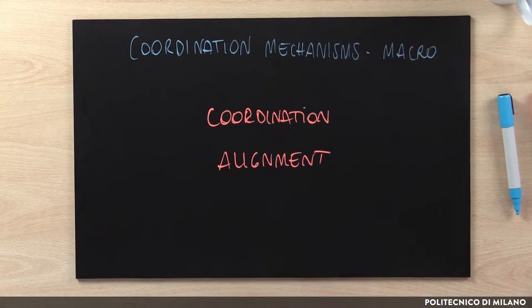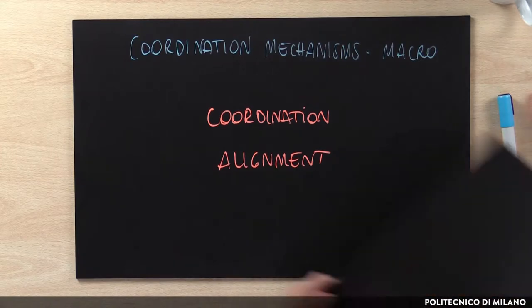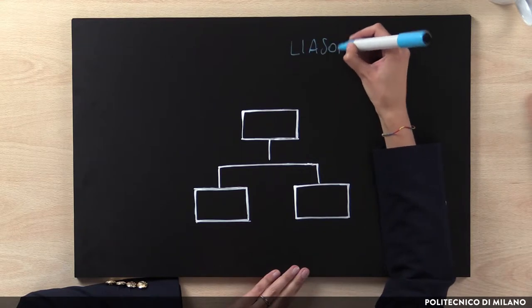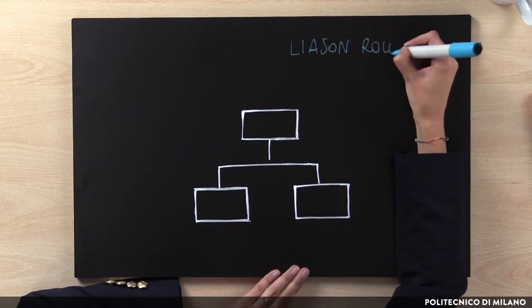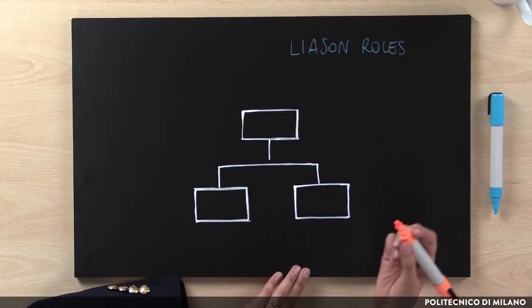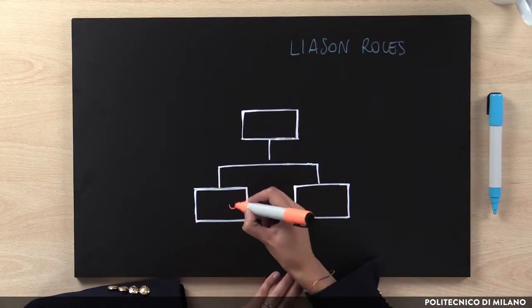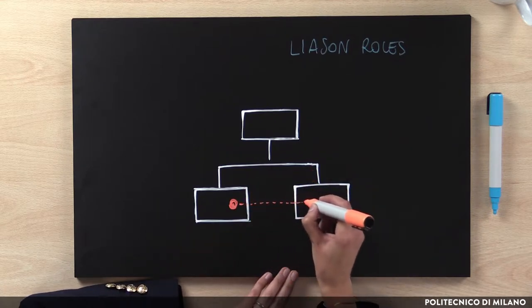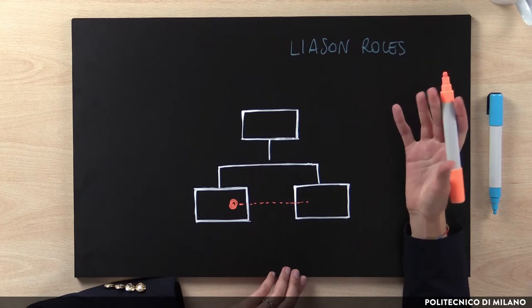We have also specific coordination mechanisms to put in place at the macro level. The first and simplest one are liaison roles. Liaison roles are dedicated to horizontal coordination between two organizational units. In other words, we can decide to have within one unit a specific person that is dedicated to coordinate and share information with another unit.